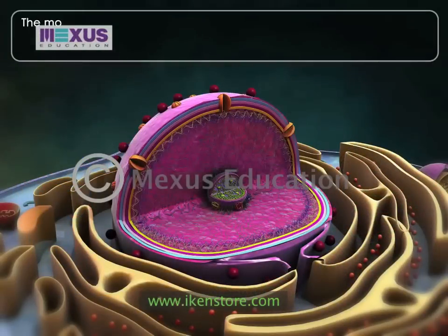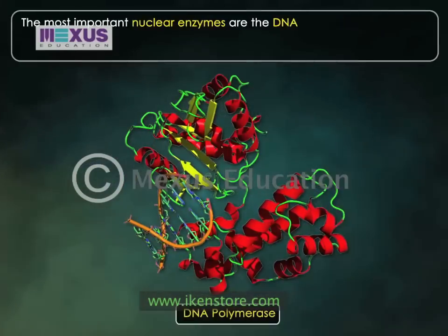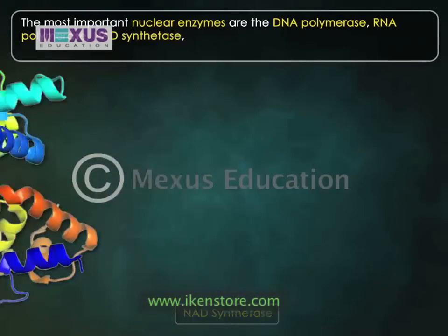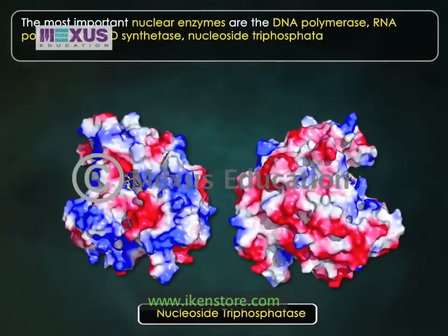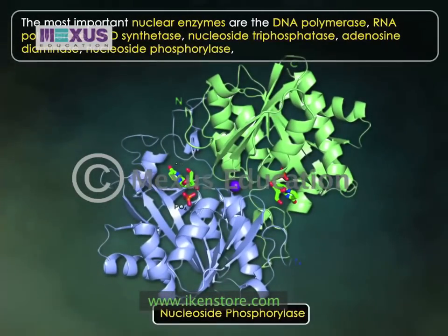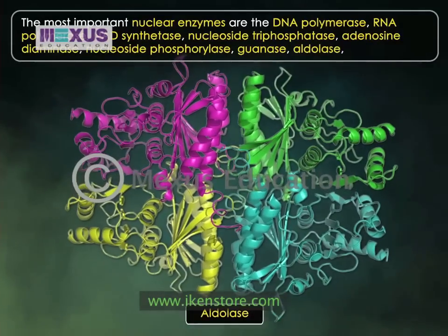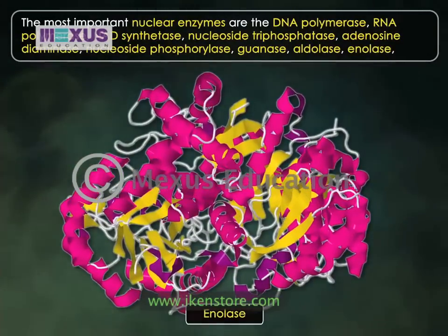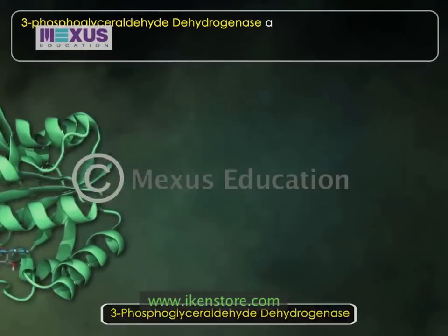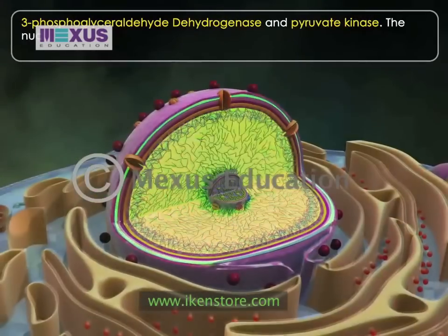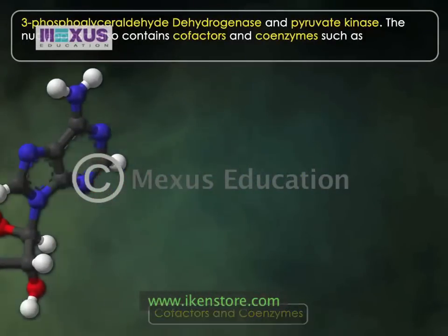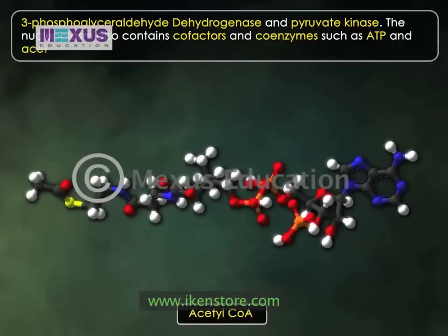The most important nuclear enzymes are DNA polymerase, RNA polymerase, NAD synthetase, nucleoside triphosphatase, adenosine deaminase, nucleoside phosphorylase, QNase, aldolase, enolase, 3-phosphoglyceraldehyde dehydrogenase, and pyruvate kinase. The nucleoplasm also contains cofactors and coenzymes such as ATP and acetyl CoA.